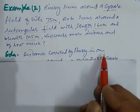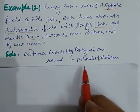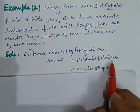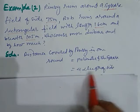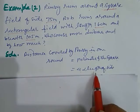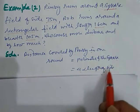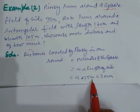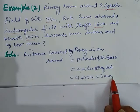Here distance covered by Pinky in one round equals perimeter of the square. And we know the perimeter of the square is 4 into length of side. So here we put the value of length of side which is 75 meter. So 4 into 75 meter is equal to 300 meter.